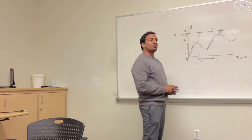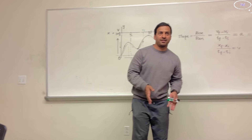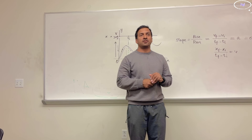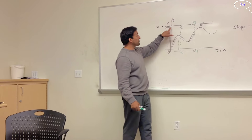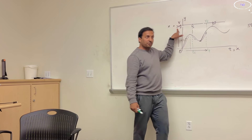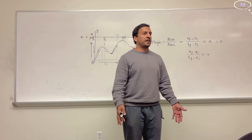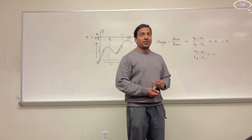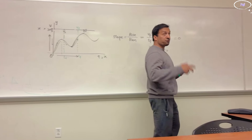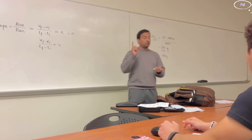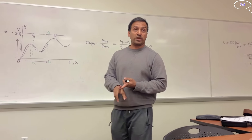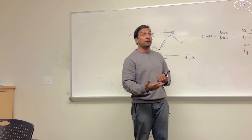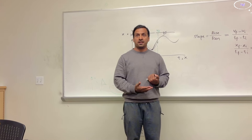You get zero acceleration for two different conditions: if an object is moving with constant speed, or if the object is at rest. Acceleration is zero in both cases. So if you're only given acceleration equals zero, you cannot tell whether the object is moving or at rest — be careful about that point.